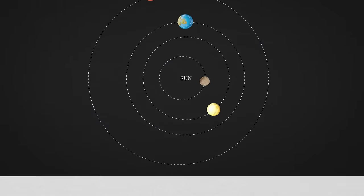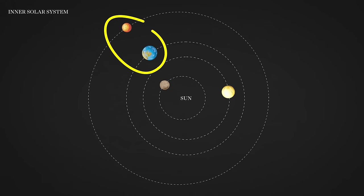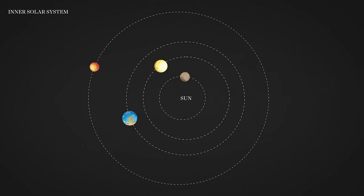A retrograde illusion like this happens when we lap an outer planet like we do with Mars every two years, or when an inner planet laps Earth like Mercury does every four months or so.